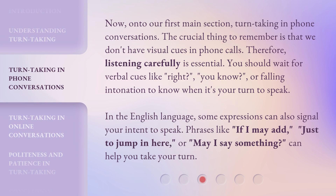Now, onto our first main section: turn-taking in phone conversations. The crucial thing to remember is that we don't have visual cues in phone calls. Therefore, listening carefully is essential. You should wait for verbal cues like 'right,' 'you know,' or falling intonation to know when it's your turn to speak. In the English language, some expressions can also signal your intent to speak. Phrases like 'if I may add,' 'just to jump in here,' or 'may I say something' can help you take your turn.